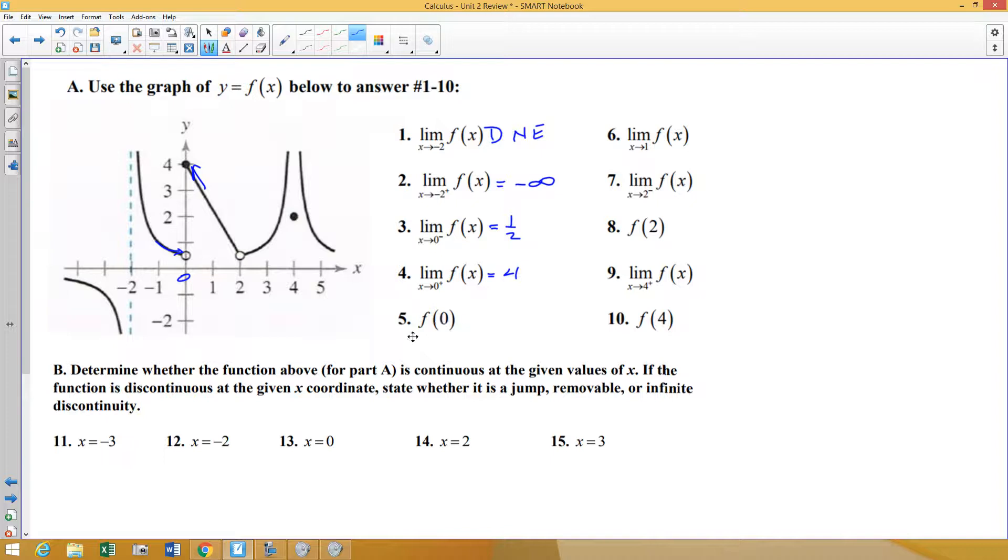F of 0 means where am I specifically when x equals 0. We are not looking at the function as it approaches 0. It's where are you, and at 0 we have a filled-in point at 4.